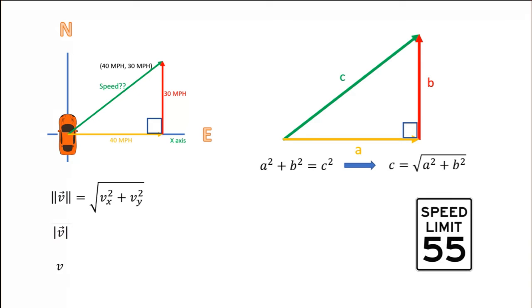In case you are concerned, if we calculate the vector magnitude here, we see that I'm only driving at 50 miles an hour, so I won't get pulled over. That's it. Thanks for watching.